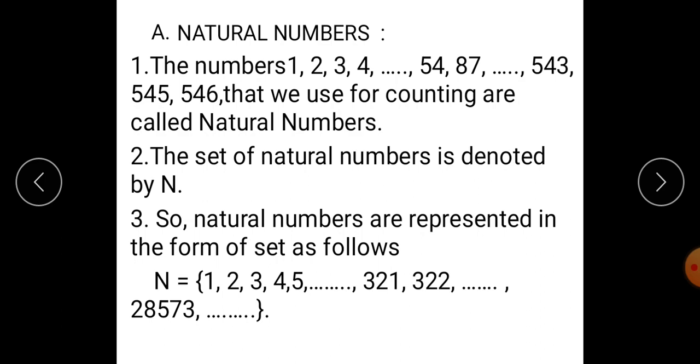Now you know that 1, 2, 3, 4, 5, 6, 7, 8, and 9 are the first 9 single digit numbers. And the numbers 1, 2, 3, 4, 54, 87, 543, 545, 546 that we use for counting are called as natural numbers.